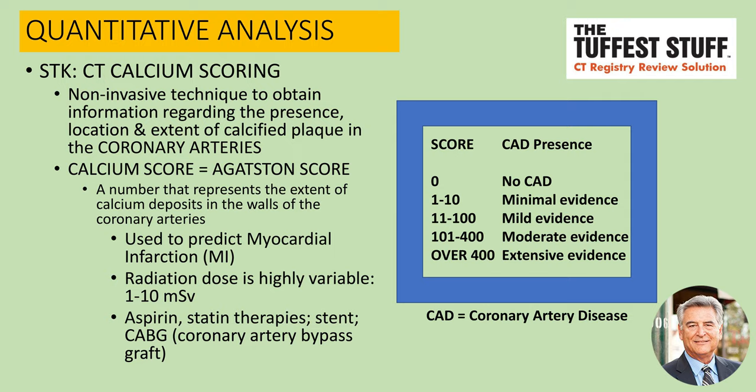At a score of zero, no coronary artery disease is thought to be present. At 1 to 10, there's minimal evidence. At 11 to 100, there's mild evidence of coronary artery disease. And at 101 to 400, moderate evidence of coronary artery disease. Over 400, that's the extensive evidence category.